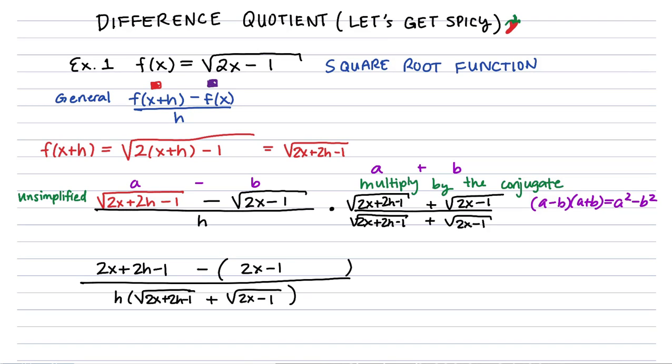Now let's clean up the numerator, and hopefully we're going to see how to cancel the factor of h. So I see a 2x minus a 2x, so these cancel, and I see a negative 1 minus a negative 1, so those cancel. That leaves me with a numerator of 2h.